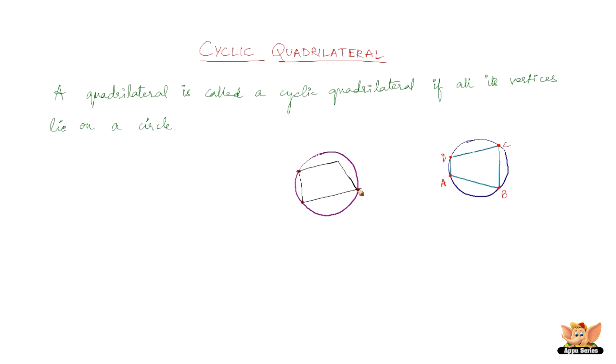If you can notice here, there are four vertices A, B, C, D, out of which only three vertices lie on the circumference of a circle. That is A, B and D. The vertex C does not lie on the circumference of a circle. It is lying inside the circle. So this is not a cyclic quadrilateral. This is a cyclic quadrilateral.